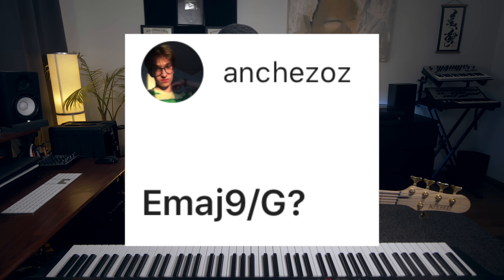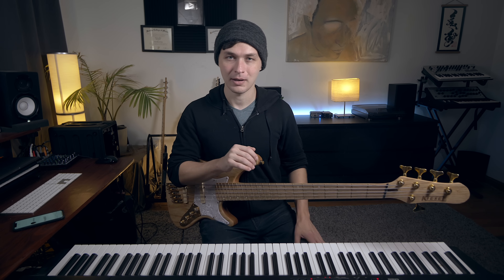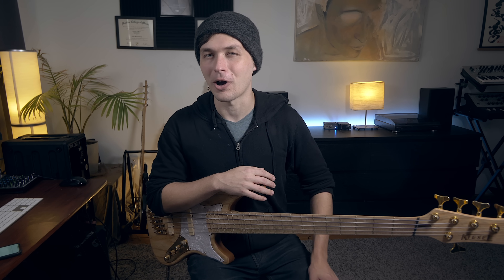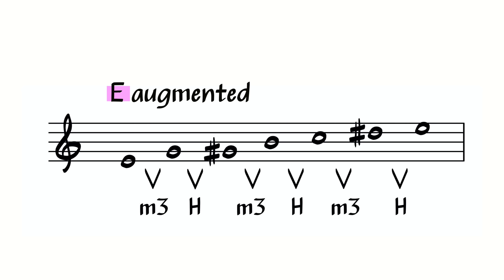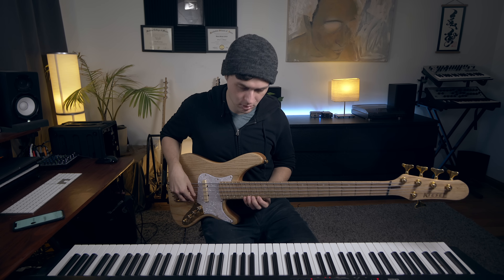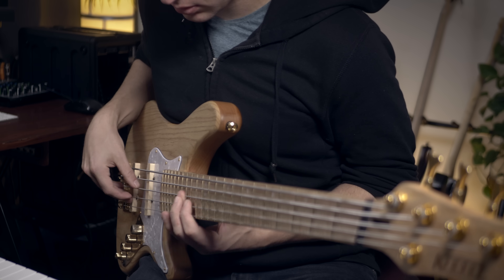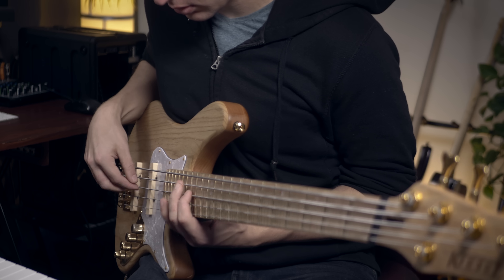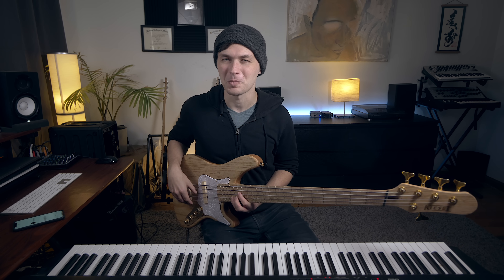E major 9 over G. That's pretty intense. I might use an E augmented scale to improvise over that, which is just a scale that alternates minor thirds and half steps.